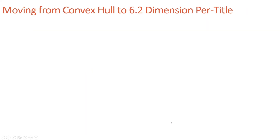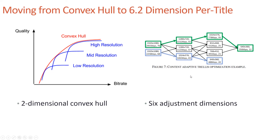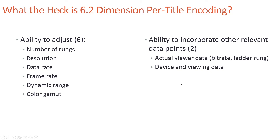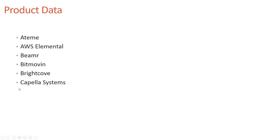We've evolved from a two-dimensional convex hull looking at resolution and data rate to six adjustment dimensions as seen in the ATEN analysis, with two additional input dimensions from context-aware encoding looking at device connection data and the device itself. So 6.2-dimension per-title encoding means adjusting six factors in the encoded file — rungs, resolution, data rate, frame rate, dynamic range, and color gamut — while also incorporating actual viewer data: bitrate, ladder, rung consumption, and device and viewing information.